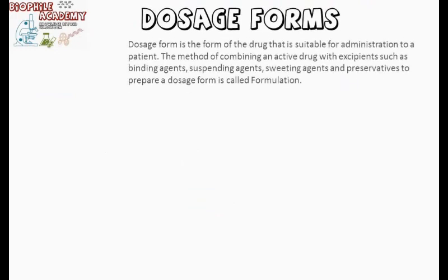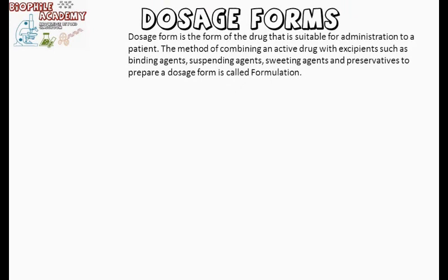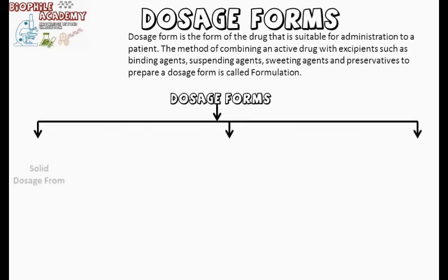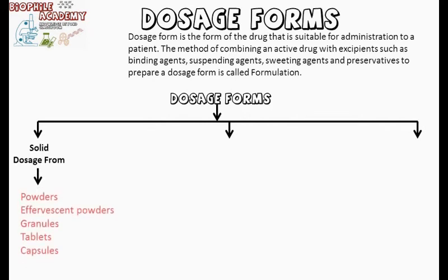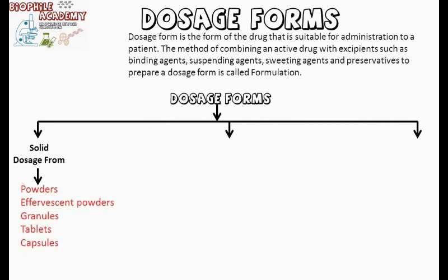Now moving to the last topic: dosage forms. A dosage form is the form of the drug that is suitable for administration to a patient. The method of combining an active drug with excipients such as binding agents, suspending agents, sweetening agents, and preservatives to prepare a dosage form is called formulation. Solid dosage forms are meant for oral use and include powders, effervescent powders, granules, tablets, and capsules.